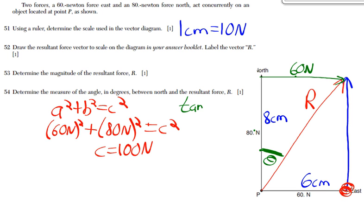So tan theta is opposite over adjacent, 60 newtons over 80 newtons. We're going to do an inverse tangent on both sides. Inverse tangent of 60 over 80 equals theta, and you should get about 37 degrees.